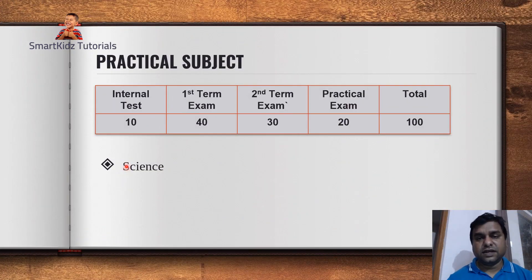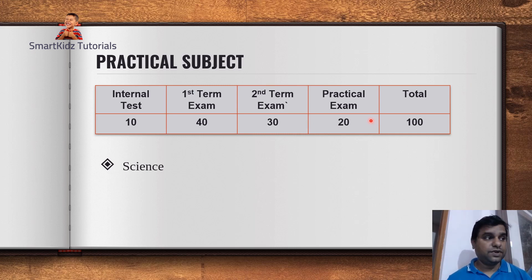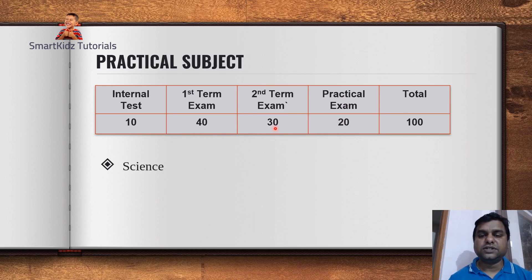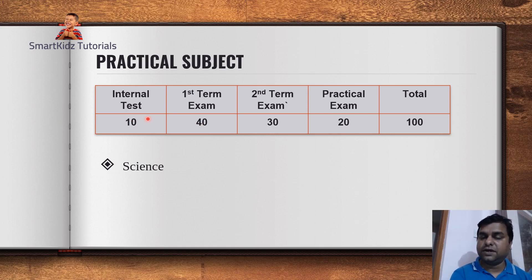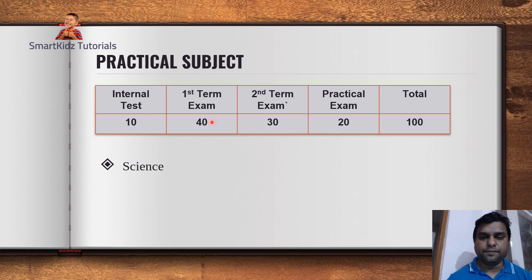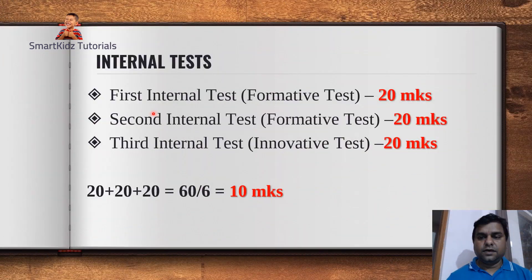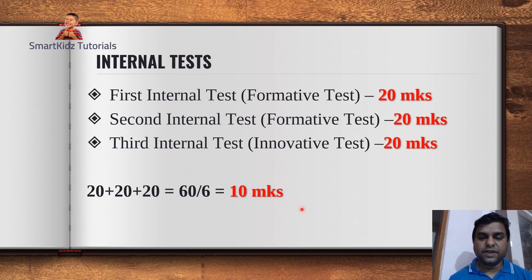For Science, which is a practical subject, the mark allocation is different. The first term MCQ was 40 marks, the second term April exam was 30 marks, so 40 plus 30 equals 70. The practical exam — your journal, neatness, and up-to-date work — carries 20 marks, bringing the total to 90. The remaining 10 marks come from internal tests. Unlike other subjects where the average of three tests is divided by 3, for Science it is divided by 6, giving a maximum of 10 marks.